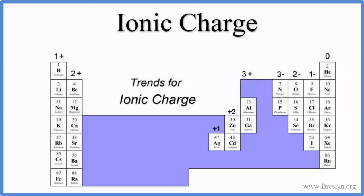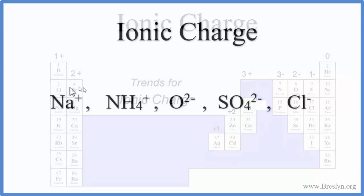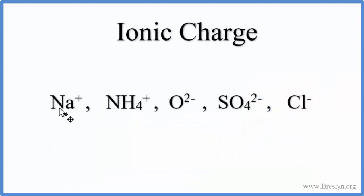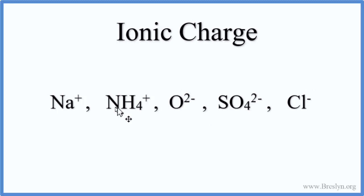We can tell if something is an ion because it has a charge after it. Na+ is the sodium ion, and Cl- is the chloride ion. These are individual elements, like oxygen, the oxide ion. Those with more than one element are called polyatomic ions. Note that when we write charge, if it's 1+ we just write plus, or if it's 1- we just write minus.